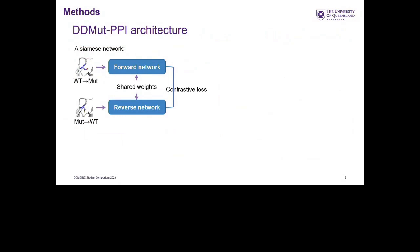The DDMut-PPI architecture is essentially a Siamese network composed of two parts — one for the forward mutation and another for the reverse mutation. They share exactly the same architecture and the same weights. In the end, a contrastive loss is computed and we aim to minimize this.